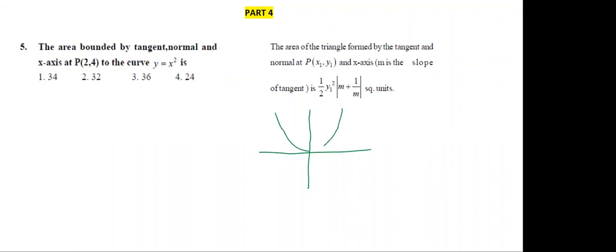Now draw the tangent at the particular point. I am drawing the tangent at this point, and this is the normal. The tangent, normal, and x-axis — those three form a triangle. So this is the triangle. The shaded area is the required area.